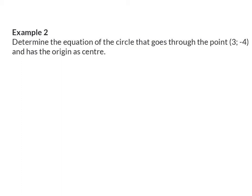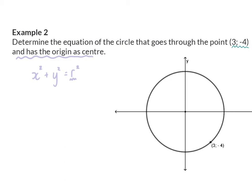Example 2: Determine the equation of the circle that goes through the point (3, −4) and has the origin as center. Once again, the origin is the center, so the standard form is x squared plus y squared equals r squared, and we need to calculate r squared. This time we were not given the radius directly, but we were given a coordinate on the circle — the point (3, −4) — which we can use to calculate the radius. It's always a good idea to get a rough sketch in mind, with the center at the origin and the point (3, −4) on the circumference.